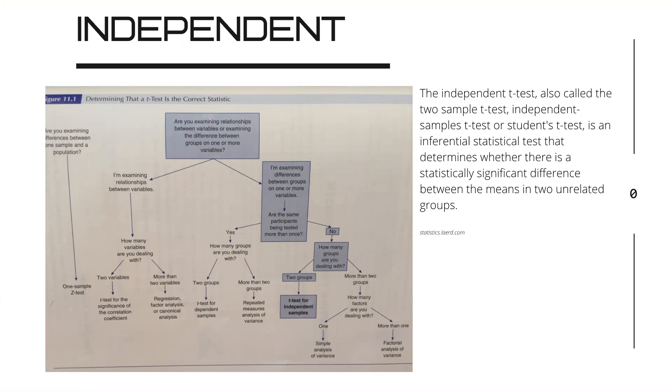In front of us, we have a flowchart. We're going to follow the blue boxes. The first question is: are you examining relationships between variables or examining a difference between groups on one or more variables? We go towards the right: I'm examining differences between groups on one or more variables.